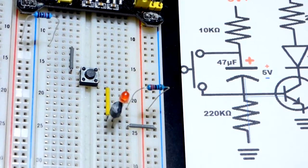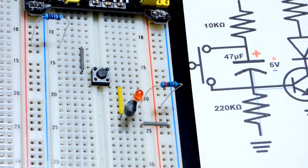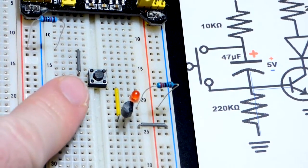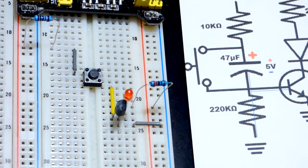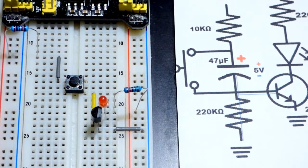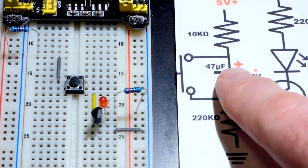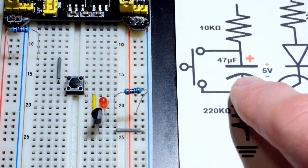So now this is going to be a little more complicated. I have here the push button switch. It's going to be parallel to a capacitor. So we're going to use a 47 microfarad capacitor.